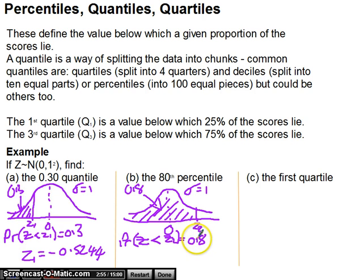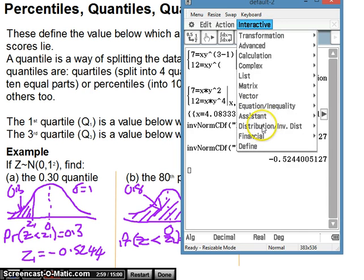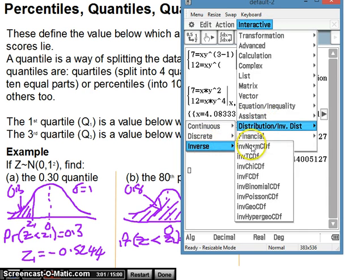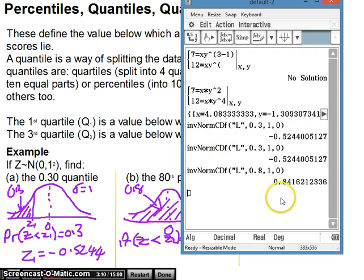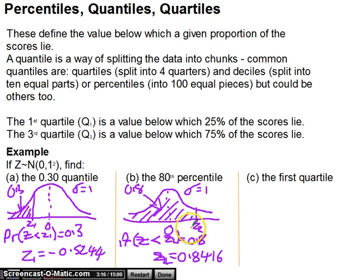Again, I've used an inverse normal distribution function on my calculator to work that out. So, I go interactive, distribution, inverse, inverse normal. It's a left tail setting still, because the data's to the left of our line there. This time, it's 0.8. It's still 1 and 0, which gives us 0.8416. So, that's telling us that at this point here, you're 0.8416 standard deviations above the mean, and that means that 80% of the data is to the left of that point.